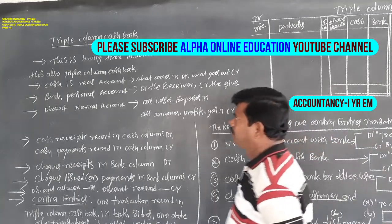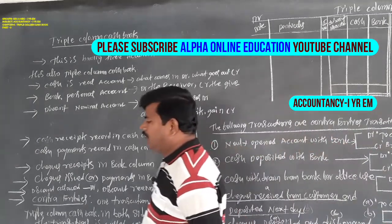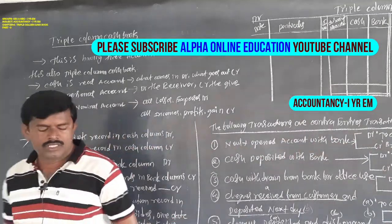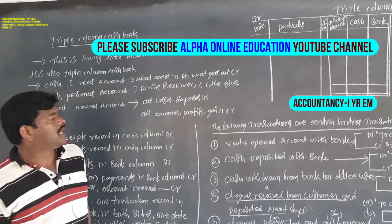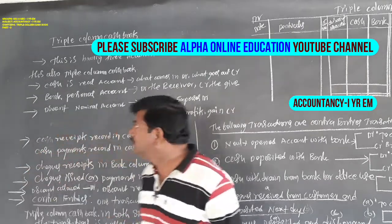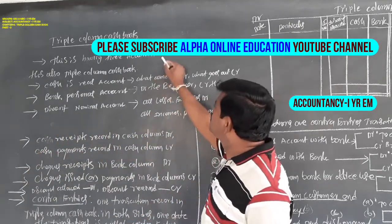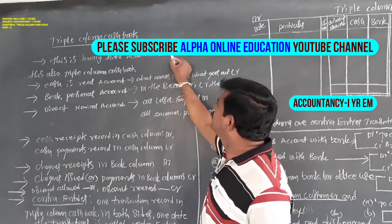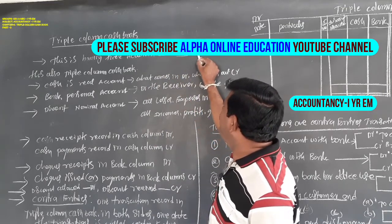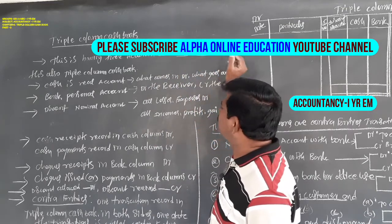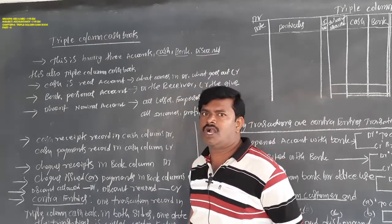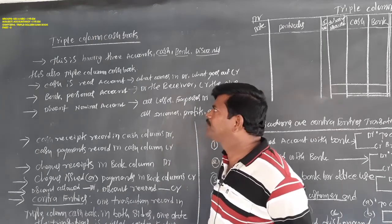Triple column cash book means there are three columns: one is cash, another one is bank, and another one is discount. So this is called triple column cash book.